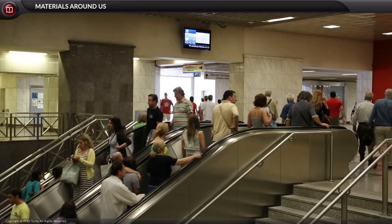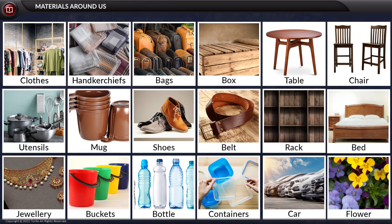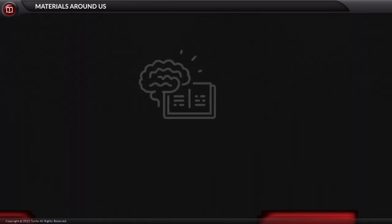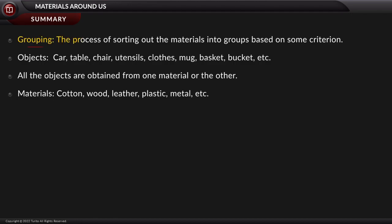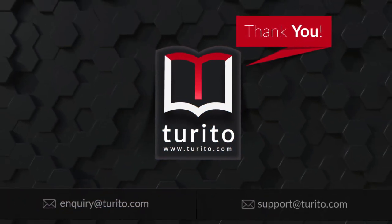We will learn how we group objects and materials in another video. But as of now, let us summarize: grouping is the process of sorting out materials into groups based on some criterion. Objects such as car, table, chair, utensils, clothes, mug, basket, and bucket are all obtained from one material or another — cotton, wood, leather, plastic, metal, or animal.